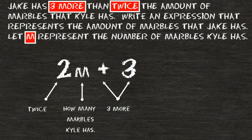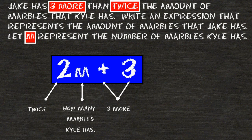But it says we have three more than that amount. So after you would multiply the number of marbles that Kyle has by two, you would have to add three more to that total. So the algebraic expression 2m + 3 would represent the number of marbles that Jake has — three more than twice the amount of marbles that Kyle has.